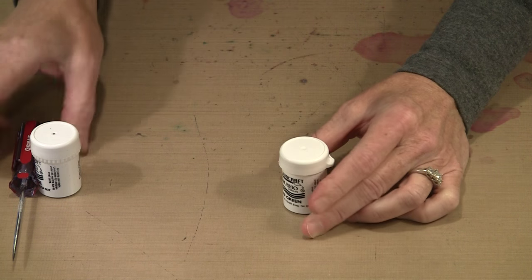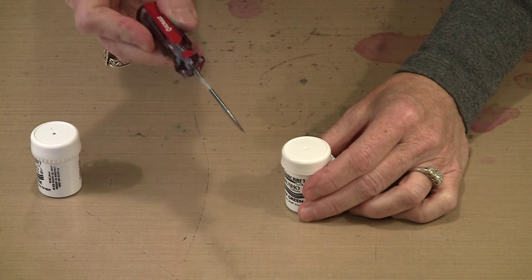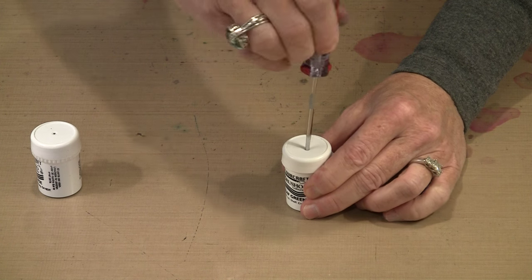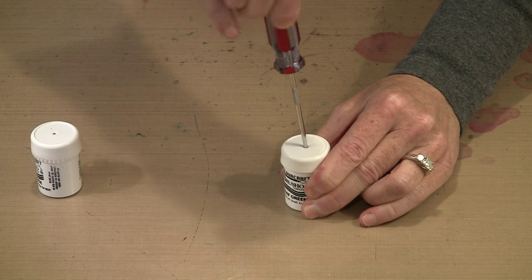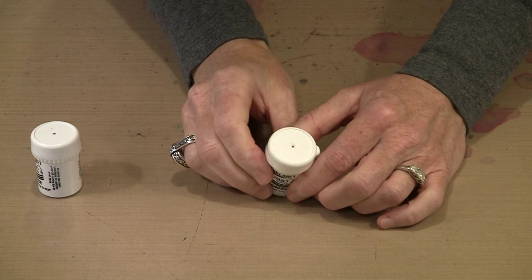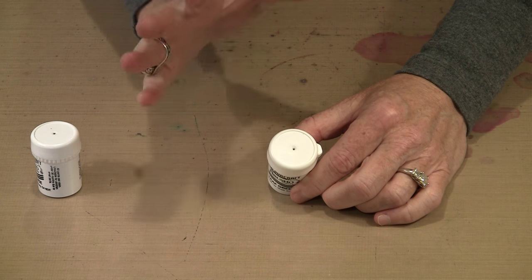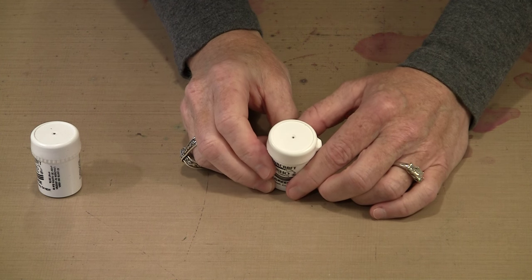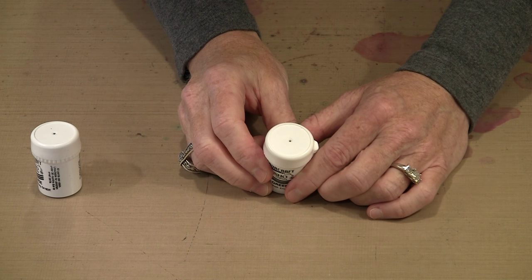The other option is if you want to sprinkle Brusho, use something like an awl, poke a hole in the top, and now you've just turned this into a little shaker bottle that you can use to apply just a smattering of crystals. We're going to look at lots of different ways to work with Brusho starting next.